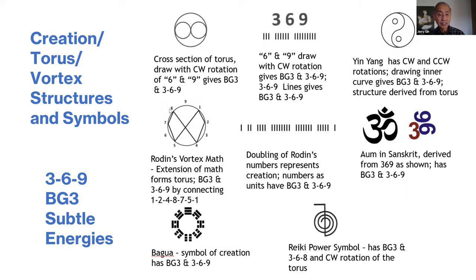That structure when drawn gives you BG3 and 369—basically the torus. If you use units—one unit, two units, four units—and lay that out in this manner, it has BG3 and 369 energies.